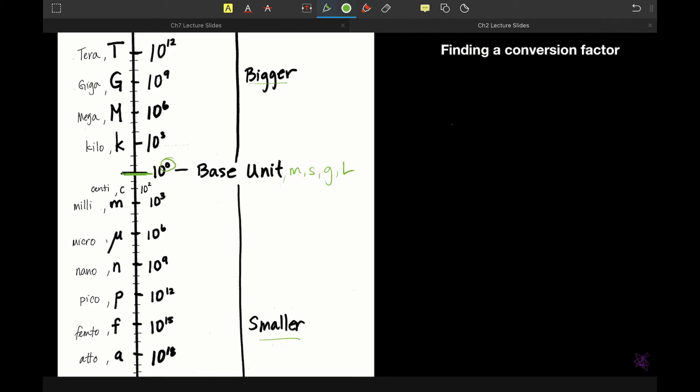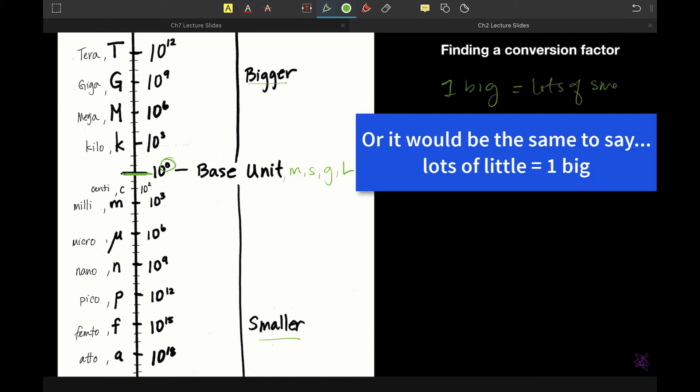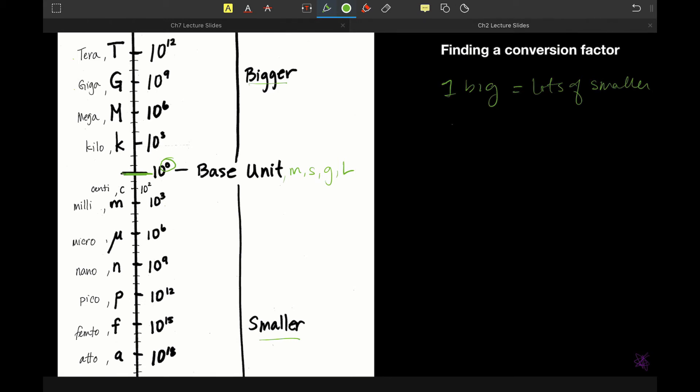And base unit has an exponent of zero. So let's talk about how we would use this. So we are always going to set up a relationship, just like we saw on the previous page. And it doesn't matter which one goes on the right or the left, but it's always going to be one big thing is equal to lots of smaller things. And we think about the land of scientific notation that we talked about, when we say lots of something, it should be 10 with a what kind of exponent? A positive exponent, because there are lots of them. So one big thing is equal to lots of smaller things. That's just how that works.